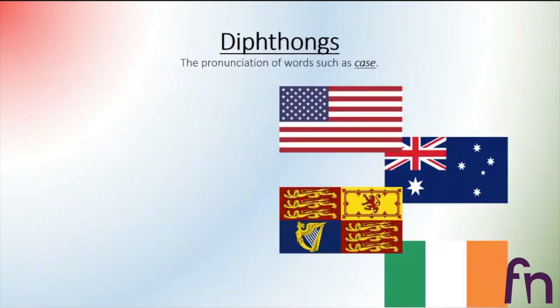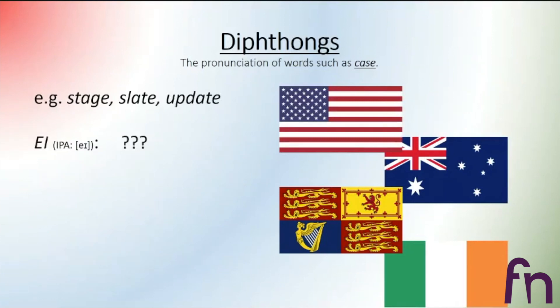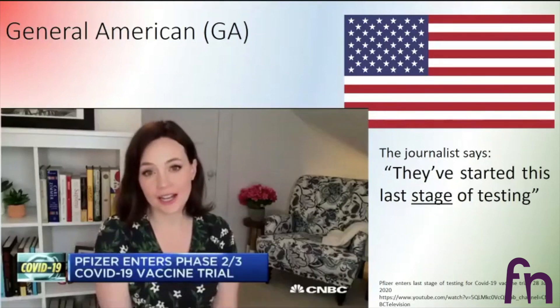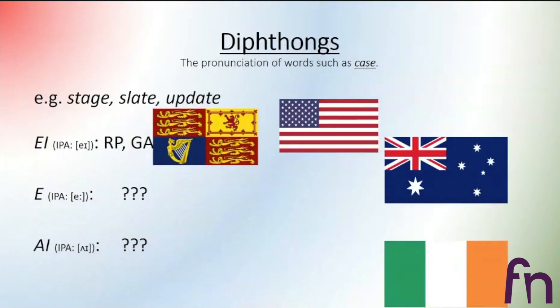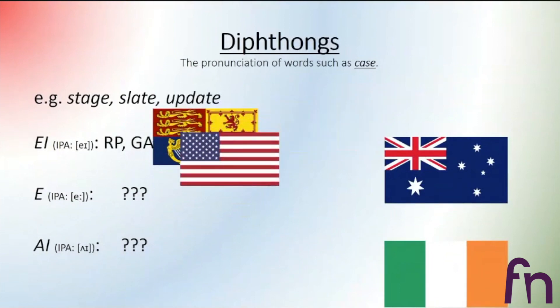The last thing we can discuss is the diphthong A — the standard [eɪ] — in words such as 'case', 'stage', 'slate', 'update'. This sound can be pronounced as [eɪ], or as long [eː], or as a diphthong [ɑɪ]. In General American, the journalist says: 'They've started this last stage of testing.' She says 'stage' clearly with [eɪ]. The same goes for RP — 'stage', 'slate', 'update', 'case'. The A diphthong is pronounced equally in RP and GA.